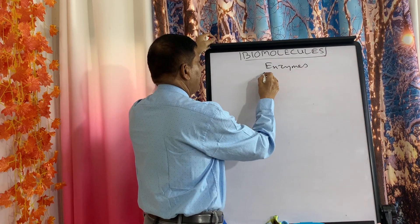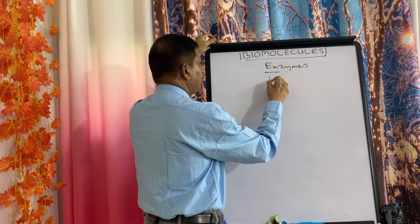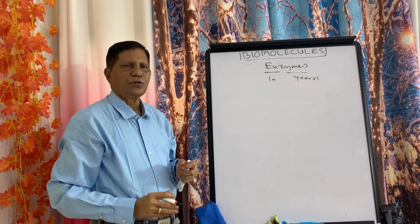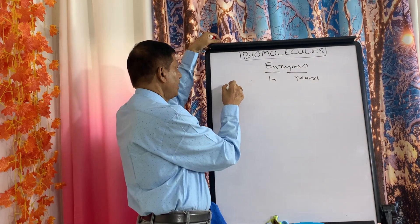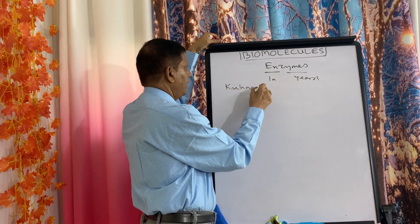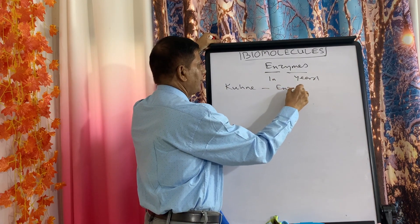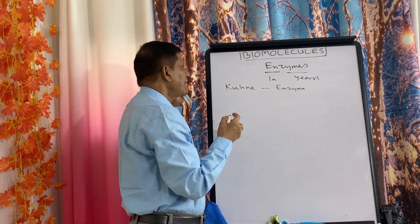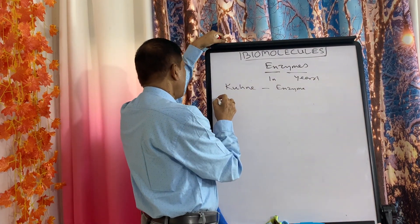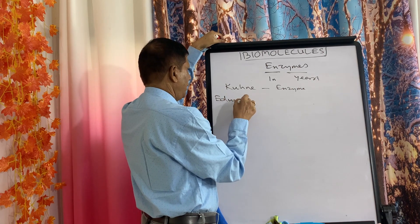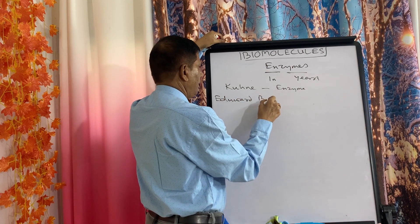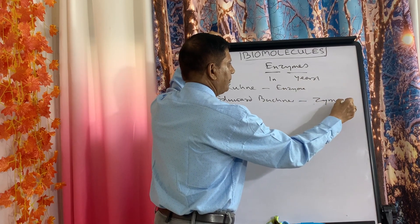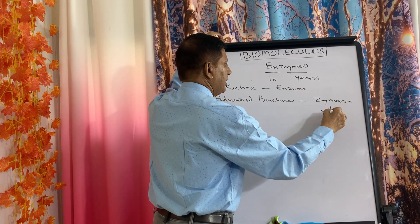The word 'enzyme' comes from 'en' meaning 'in' and 'zyme' meaning 'yeast.' The name enzyme was first given by Kühne, who named it 'enzyme' meaning 'in yeast.' Another scientist, Edward Buchner, then isolated the enzyme from yeast cells.